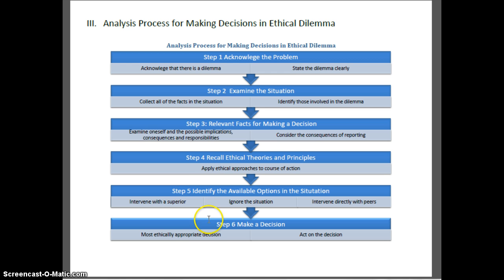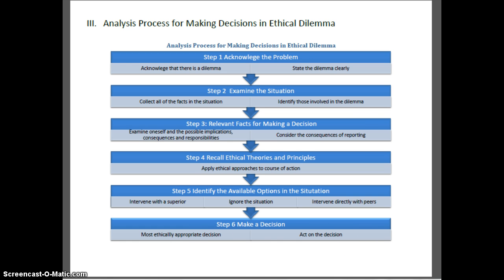Step five, you want to identify the available options. You can intervene with a superior, you can ignore it, or you can intervene directly with the officer. And step six, you want to make a decision — the most ethically appropriate decision under the facts and circumstances — and then act on that decision. These are the steps that will be used in every situation for arriving at an ethical solution to an ethical dilemma.